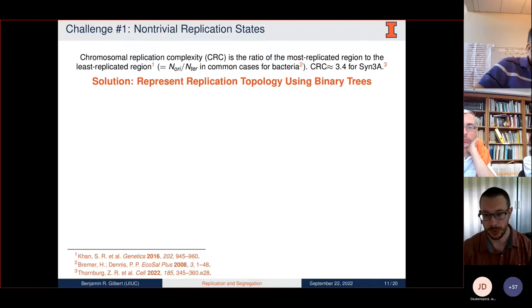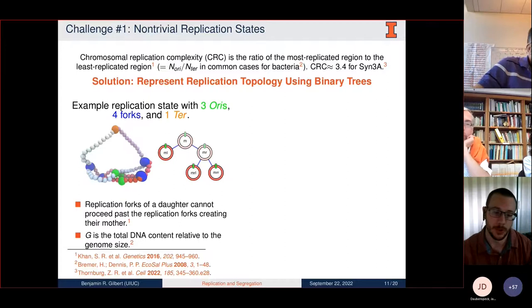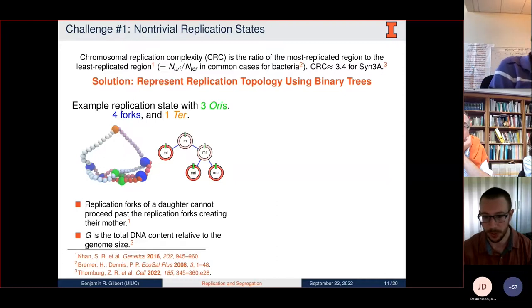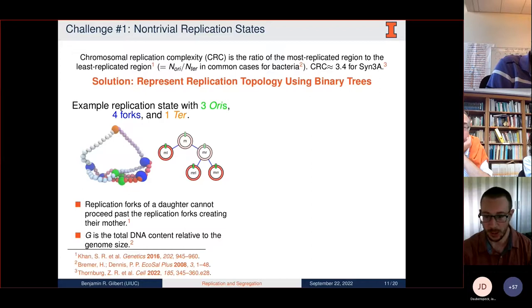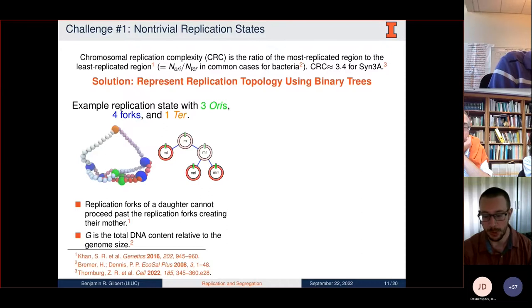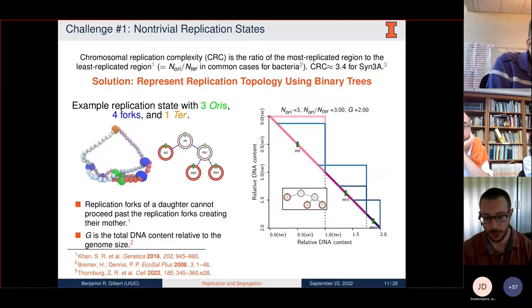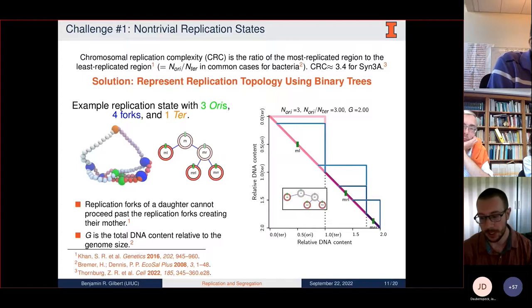My solution to addressing these non-trivial replication states was to represent the topology using binary trees. Here's an example of a replication state with three origins highlighted in green, four forks highlighted in blue, and one terminus highlighted in orange. The diagrammatic representation on the right corresponds to this structure. The underlying assumption is that the replication forks of a daughter cannot proceed past the replication forks creating their mother. An additional diagram depicts where exactly these daughter chromosomes are attached to one another.